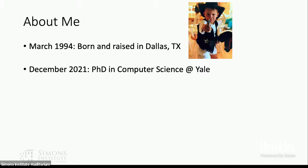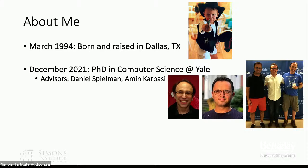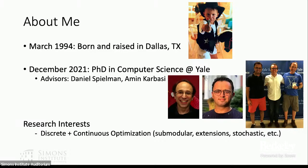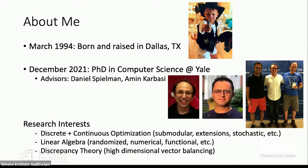I obtained my PhD in computer science at Yale, where I was advised by Amin Karbasi and Dan Spielman — this is a picture of us, so you know we were at some point in the same room. My research interests at Yale and more broadly are in discrete and continuous optimization, modular optimization, continuous extensions, stochastic optimization, linear algebra, randomized numerical methods, aspects of functional analysis, and discrepancy theory, which can be best explained as balancing high-dimensional vectors.